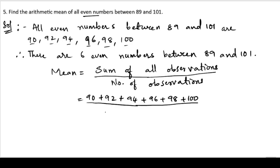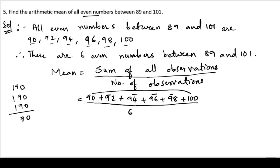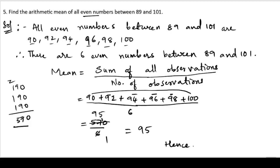The number of observations is six. Now let us add: 90 plus 100 is 190, 92 plus 98 is 190, and 94 plus 96 is 190. So 190 plus 190 plus 190 equals 570. Therefore, mean is 570 divided by 6. Dividing: 570 by 6 equals 95. Hence, the mean is 95.